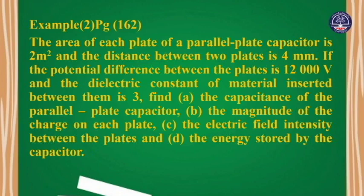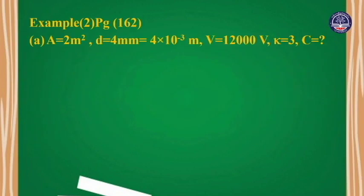Given values: area A equals 2 square meters, distance d equals 4 mm, voltage V equals 2,000 V, and dielectric constant kappa equals 3.